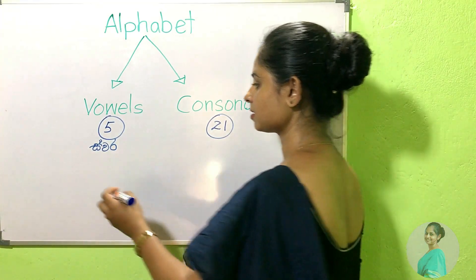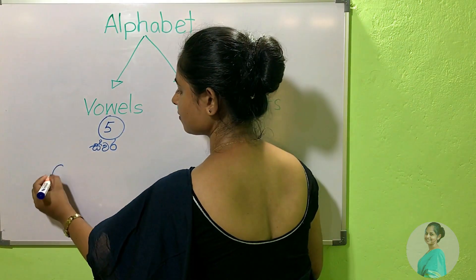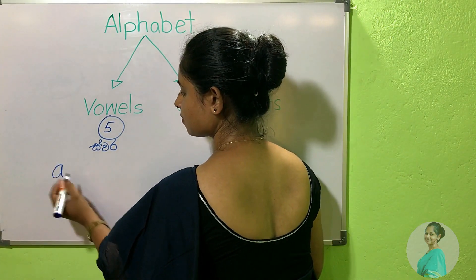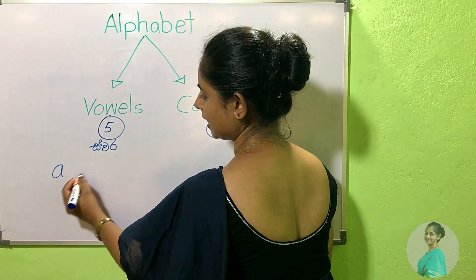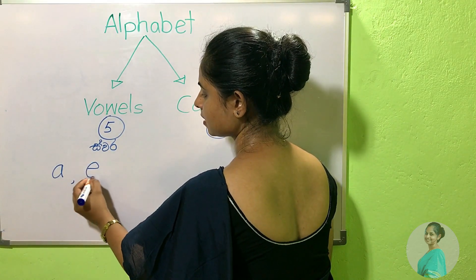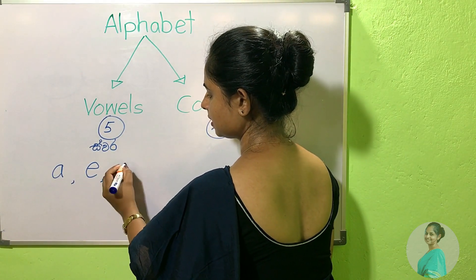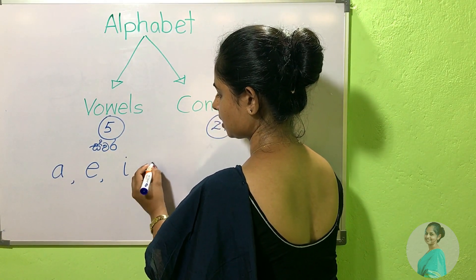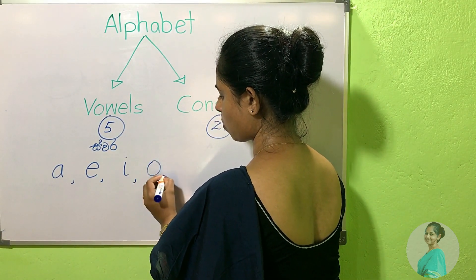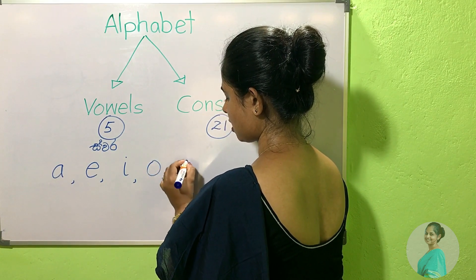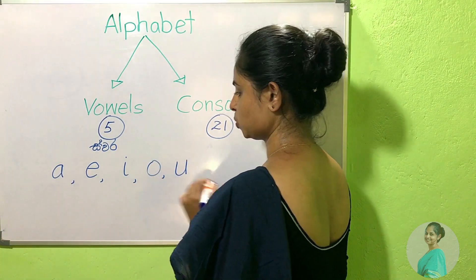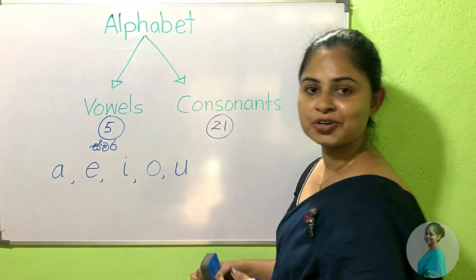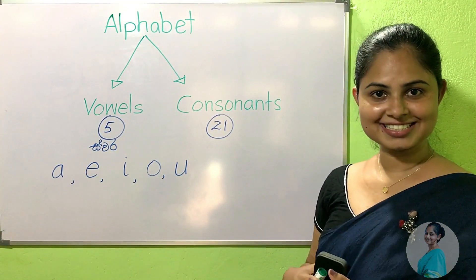There are five vowels. A, E, I, O and U. These are the five vowel letters.